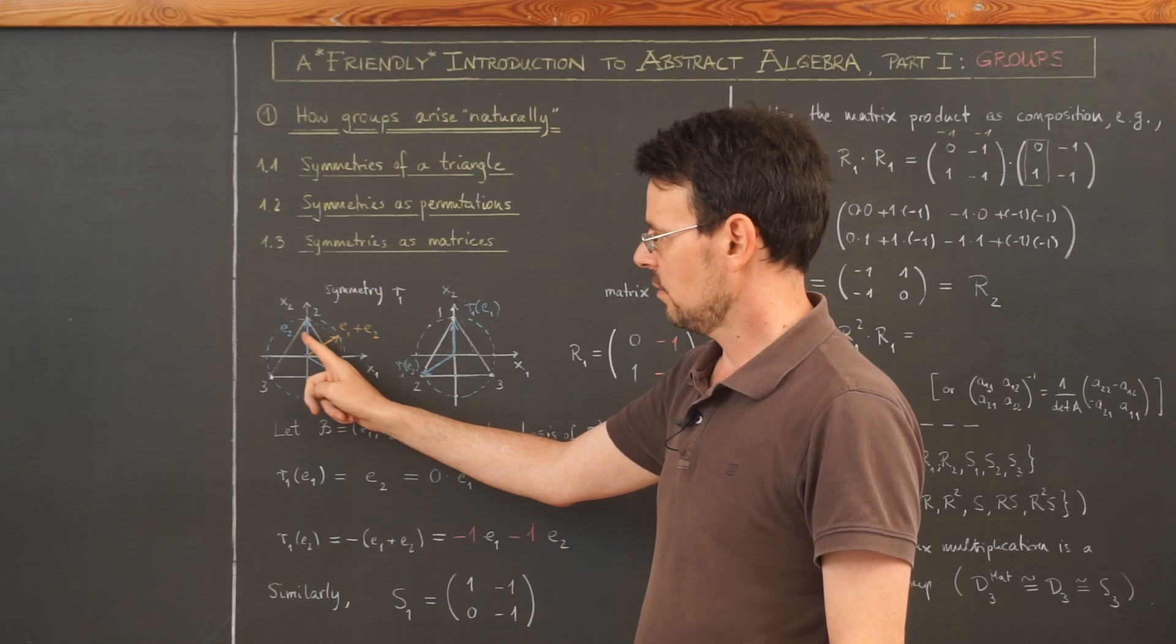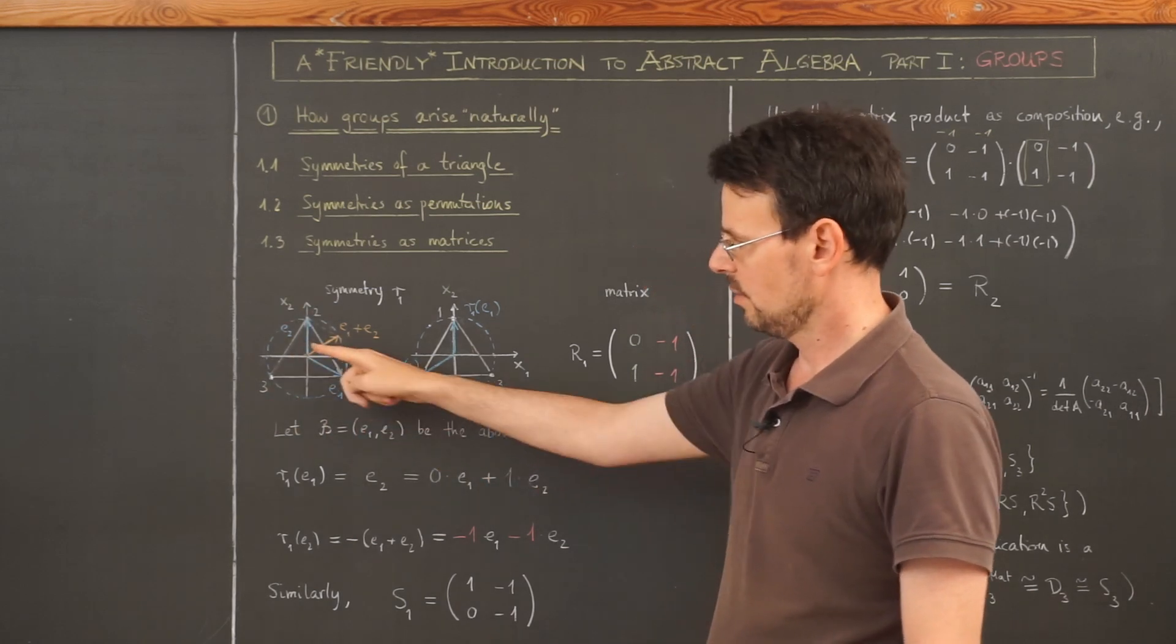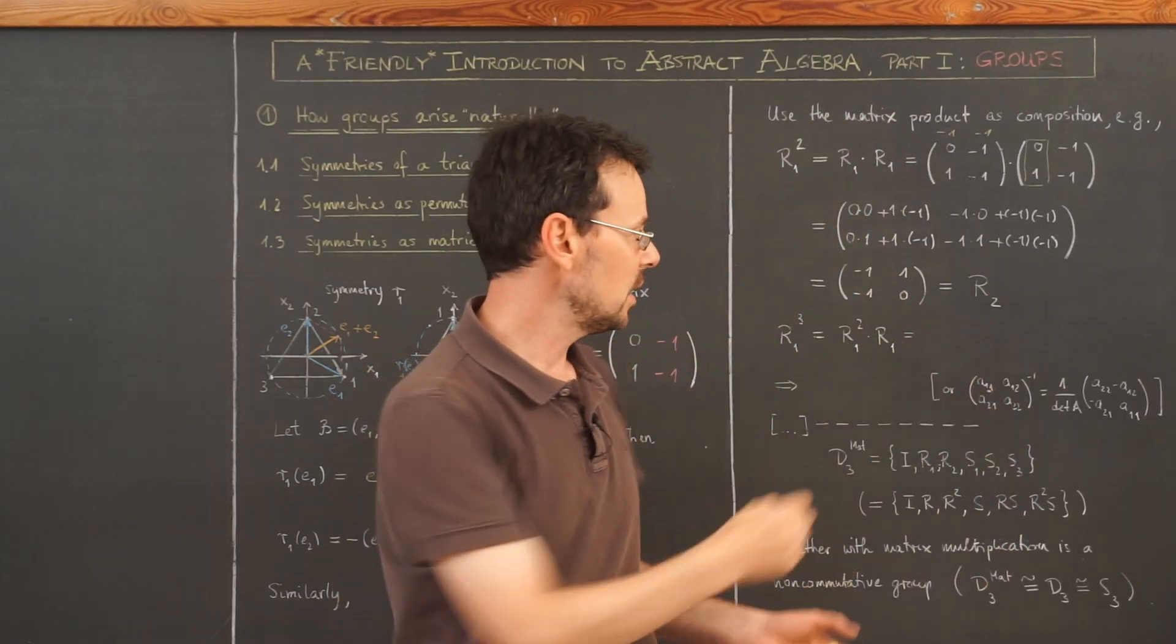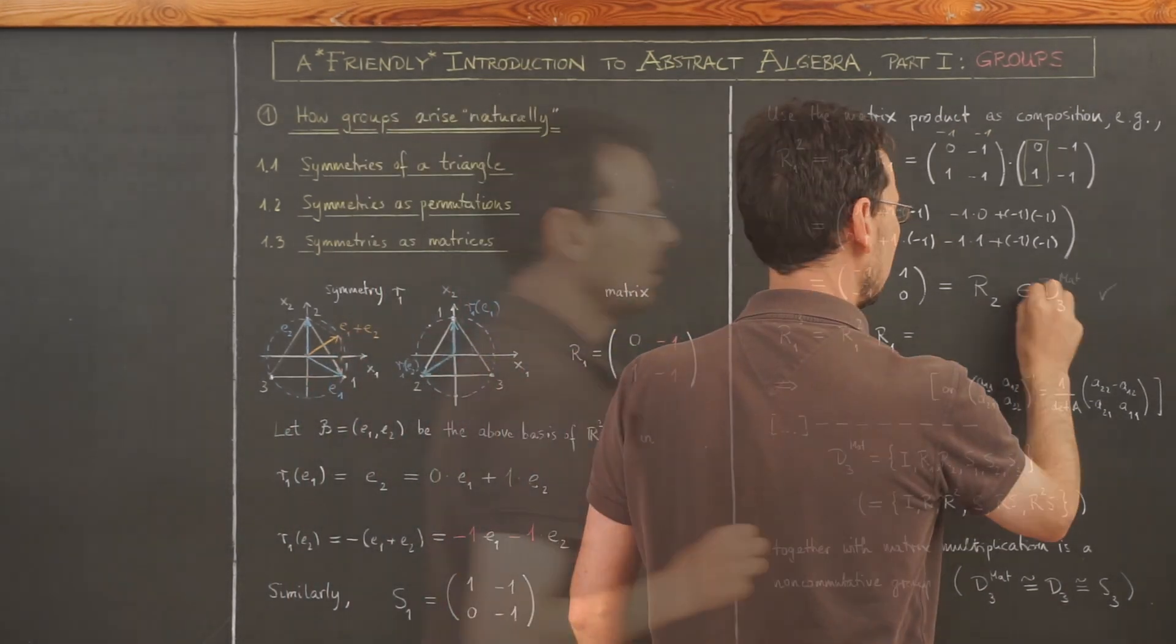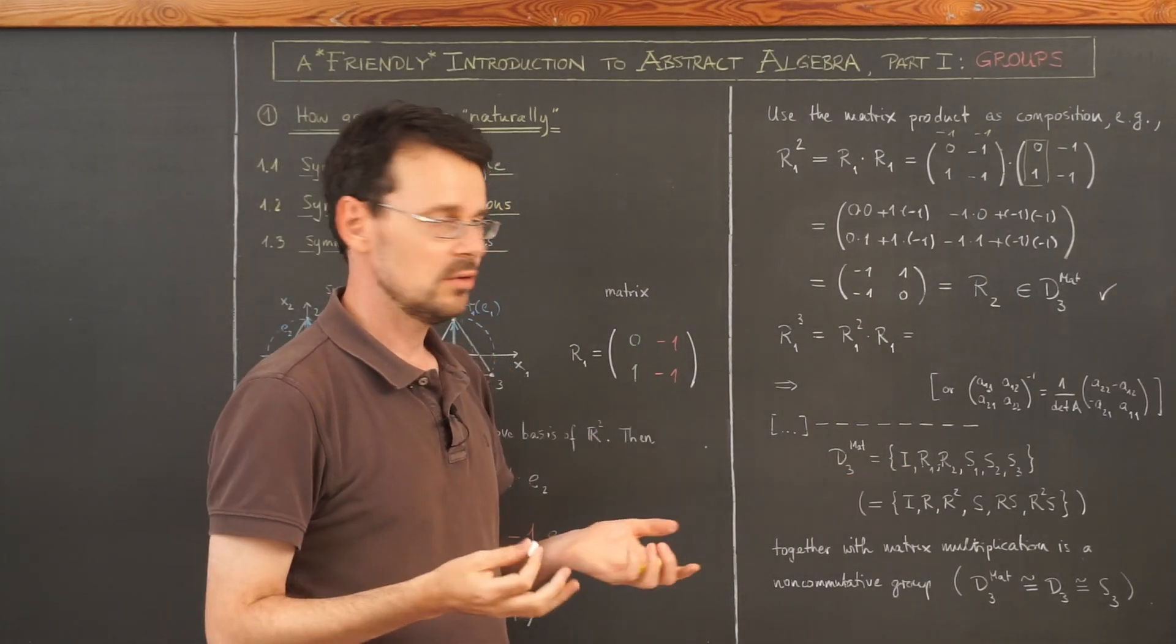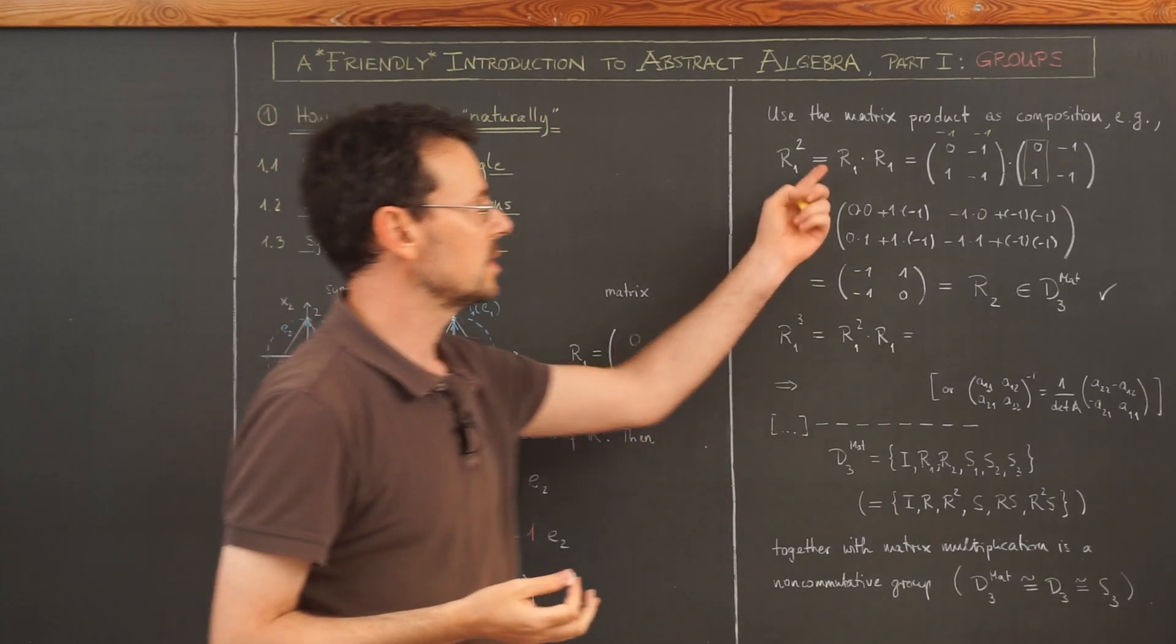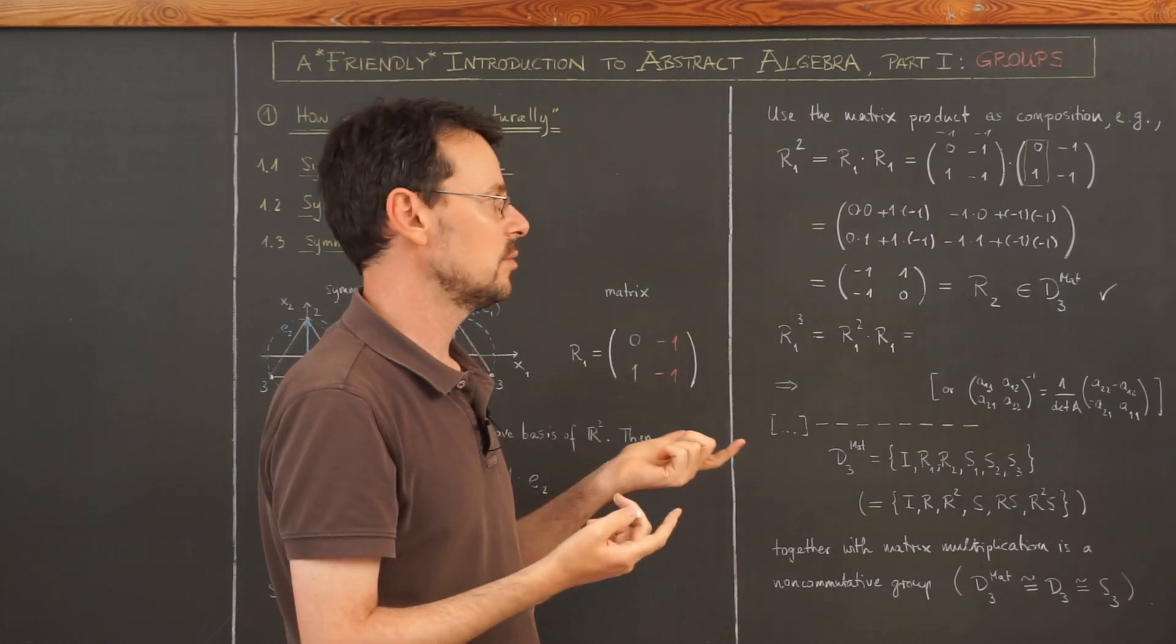So this here is the first column. And this vector, if I rotate it by 240 degrees, ends up here on vector E1. So this is simply E1, meaning this here is the second column. So this is actually, again, an element of this set here. If you have the geometric picture in the back of your mind, then this is obvious because I apply two times a symmetry of a triangle, which gives me again a symmetry.